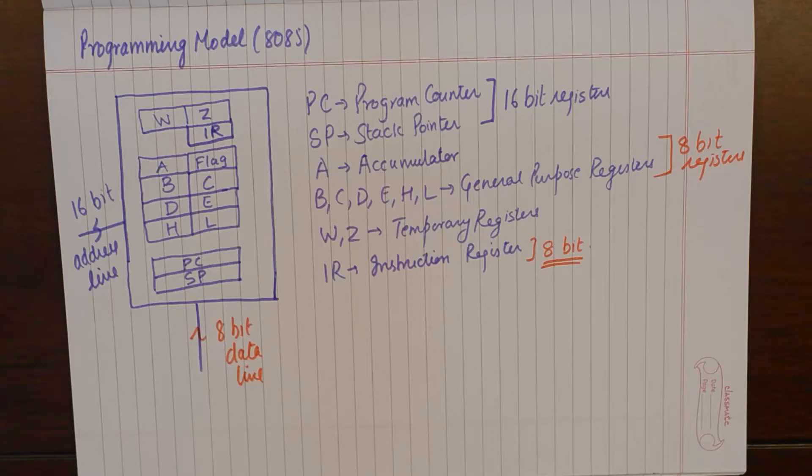We will understand that the data registers are directly linked to the data bus and the address registers are, their width is directly linked to the address lines. And that is what happens with all the microprocessors as we advance.